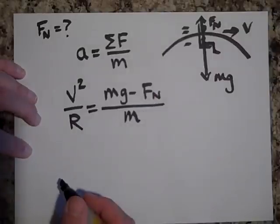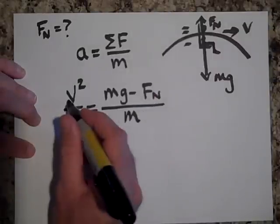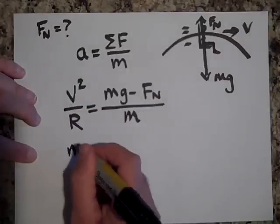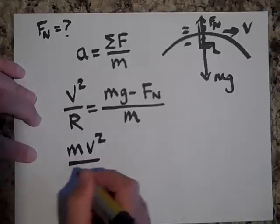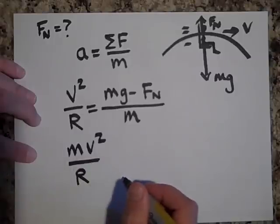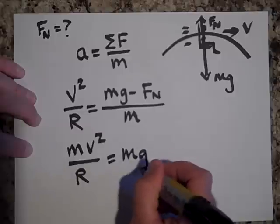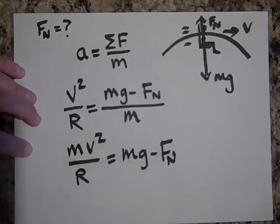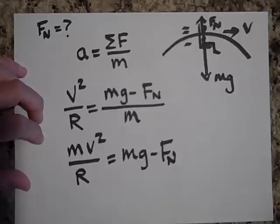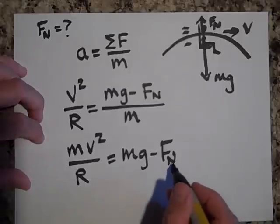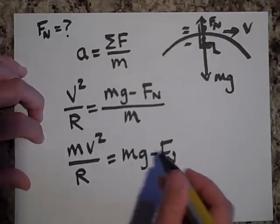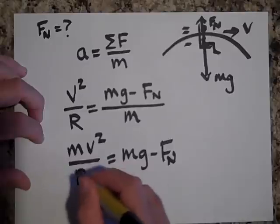So if they want me to solve for the normal force, then maybe bring the m on the other side. And that will equal Mg minus Fn.